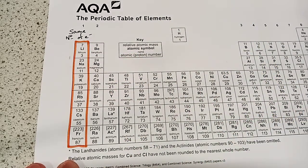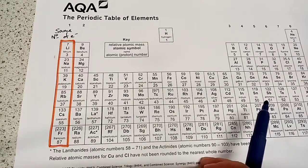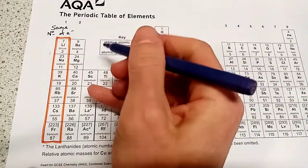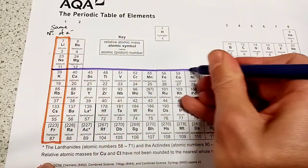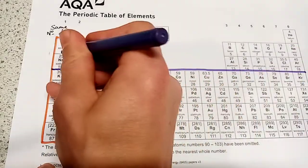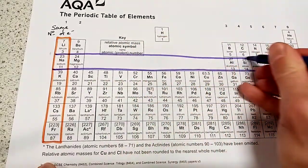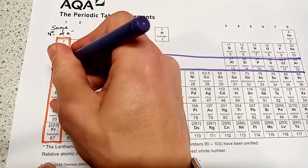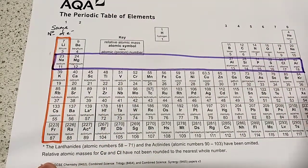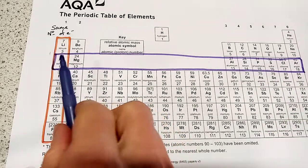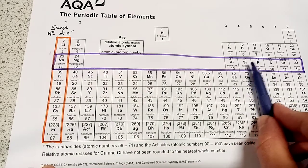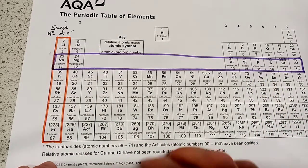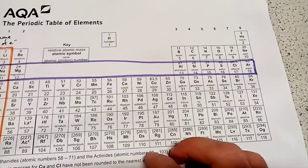Now we also have periods and the periods are the ones that go across. So for example I could draw a period coming across here. Now when we go across a period, the number of electrons in the outer shell will change each time because you're moving from group 1 to group 2 to group 3 to group 4 and so on.